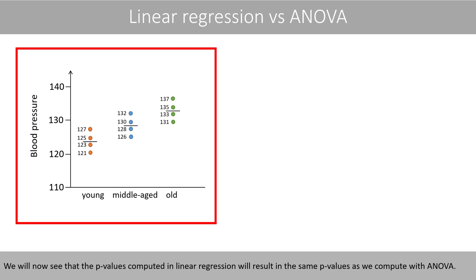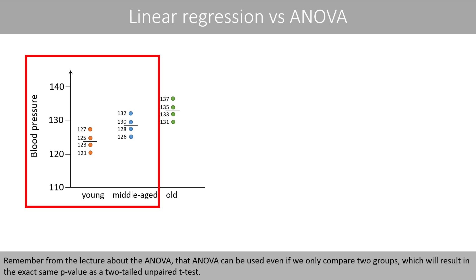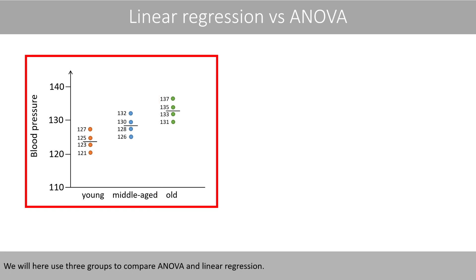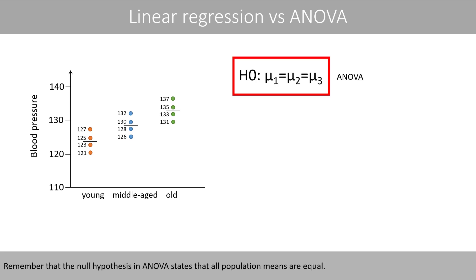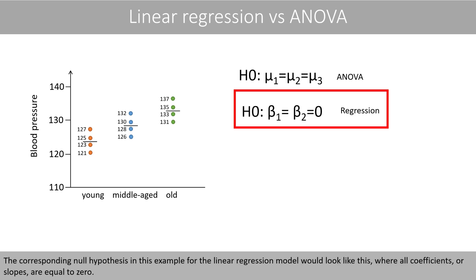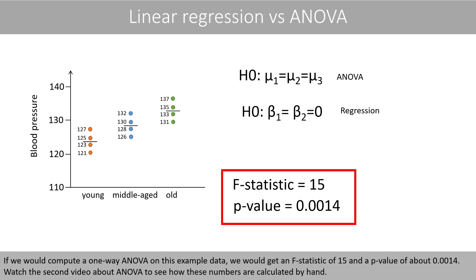We'll now see that the p-values computed in linear regression result in the same p-values as ANOVA. Remember that ANOVA can be used even if we only compare two groups, which will result in the exact same p-value as the two-tailed unpaired t-test. We'll use three groups to compare ANOVA and linear regression. The null hypothesis in ANOVA states that all population means are equal. The corresponding null hypothesis for the linear regression model states that all coefficients or slopes are equal to 0. If we compute the one-way ANOVA on this example data, we get an f-statistic of 15 and a p-value of about 0.0014.